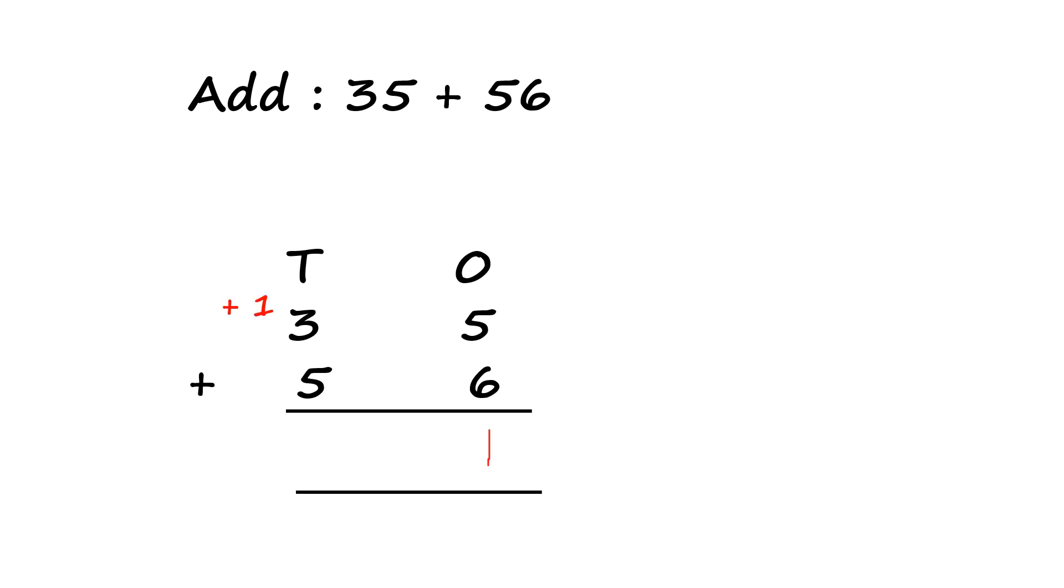Now let us add 5 and 3. 5 plus 3 is 8. Then plus 1 becomes 9. So my total is 91.